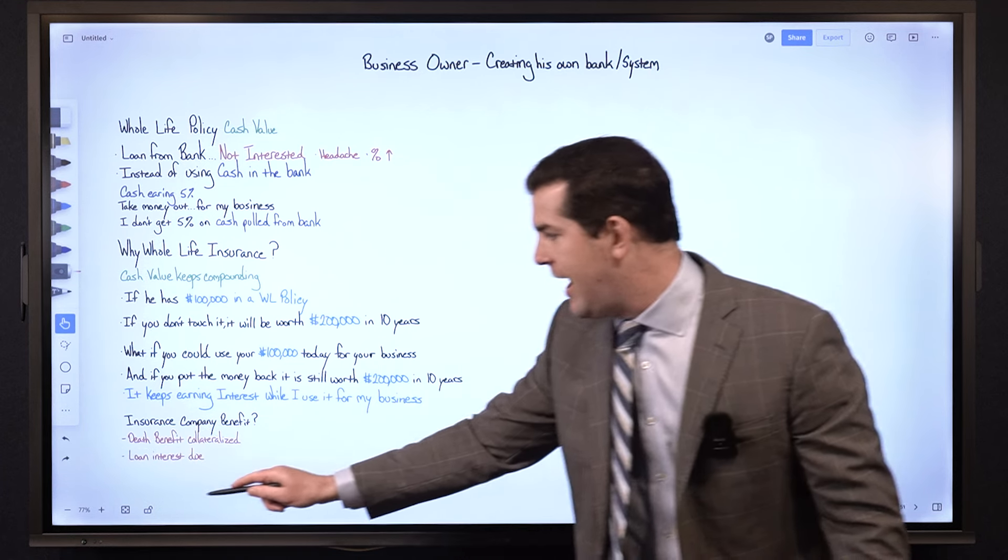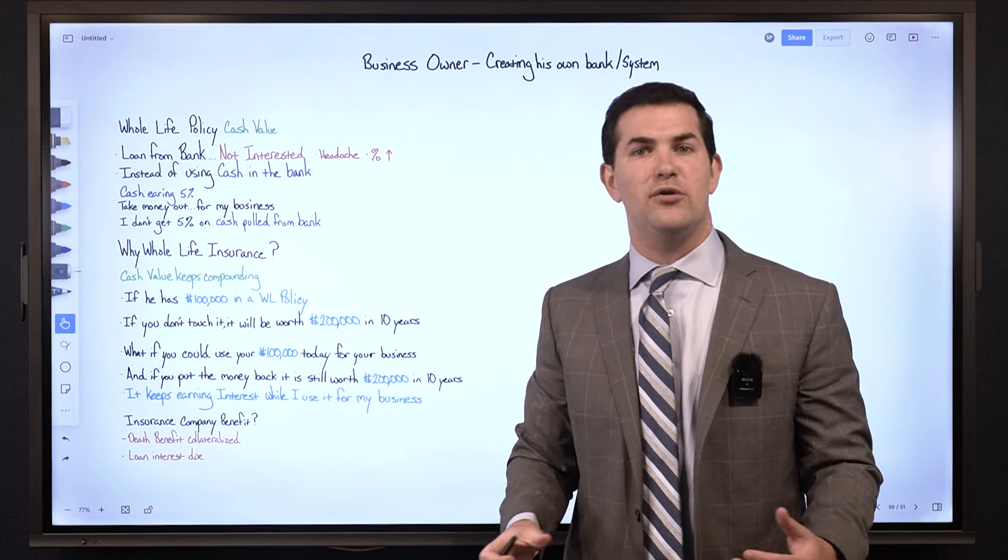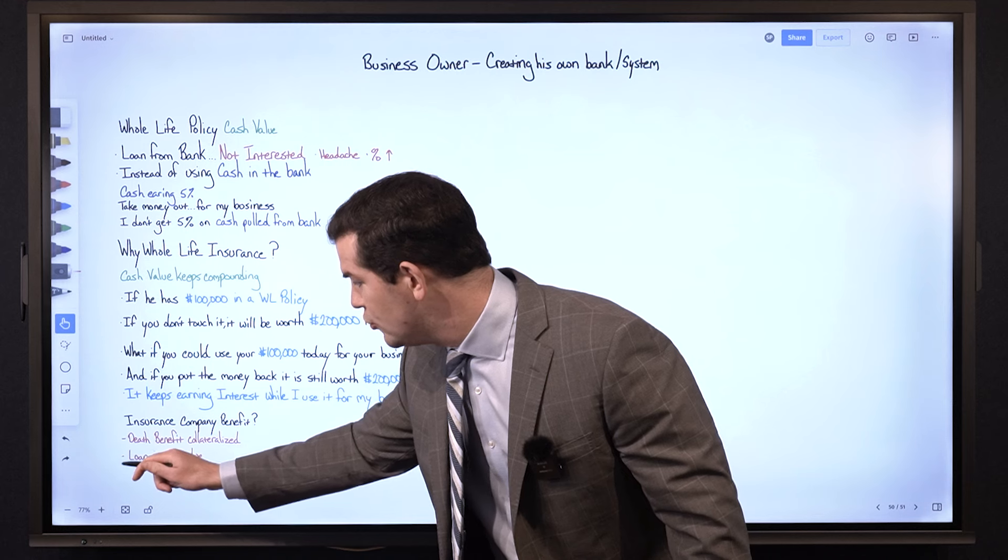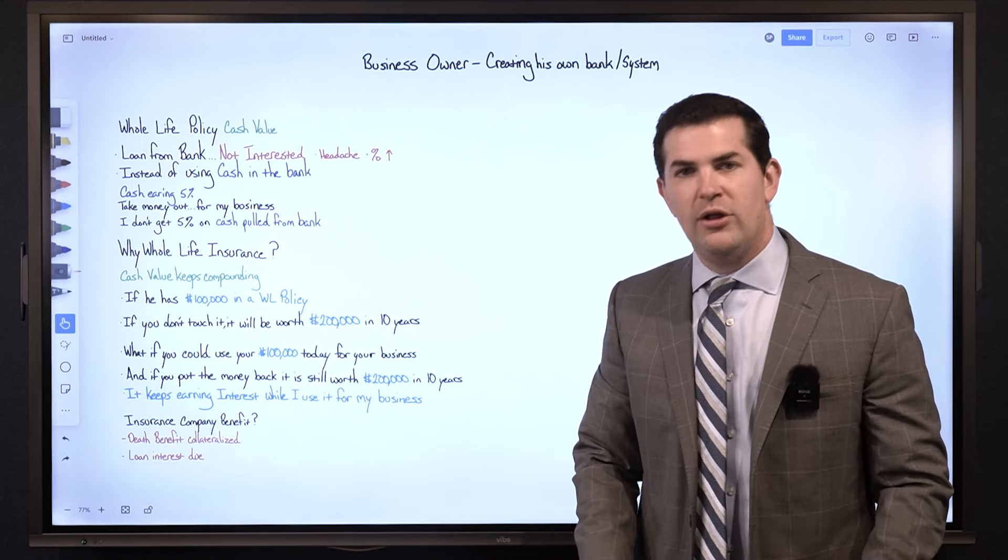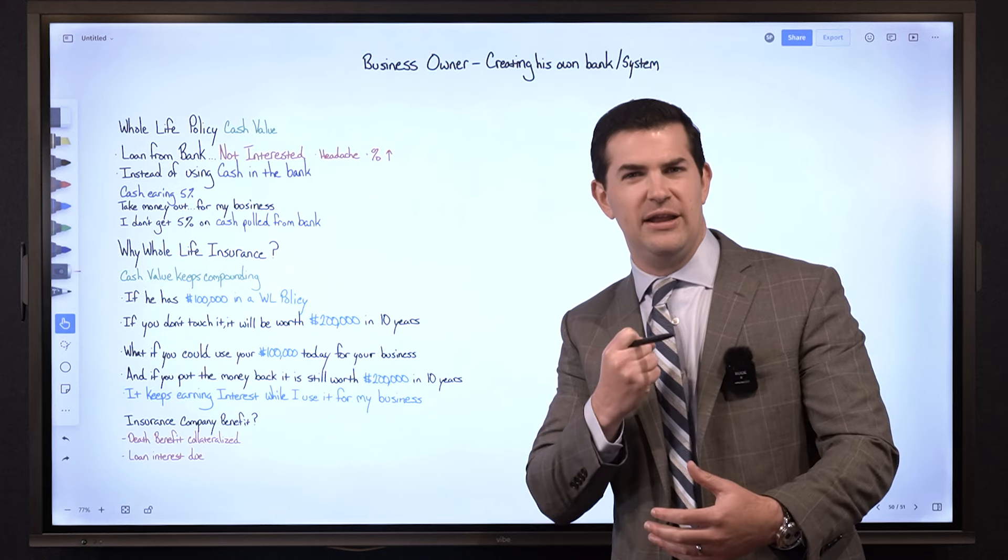So there's two things that benefit them when we borrow against our life insurance policy. Number one, anytime you take a loan the death benefit is going to be collateralized dollar for dollar. And number two, there's also going to be loan interest due which will offset the fact that they're still paying me interest on the money that's outstanding in a loan.